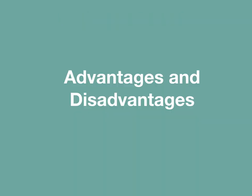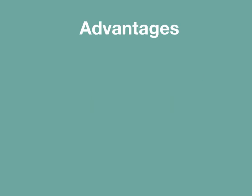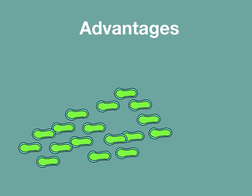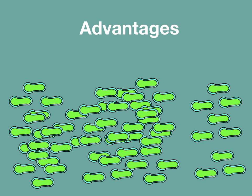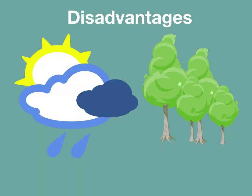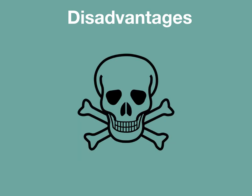There are some advantages and disadvantages to reproducing asexually. For the advantages, they can reproduce at a rapid rate and quickly increase their population. However, due to no genetic variation, if the environment changes, it will become more difficult to adapt to that new change. And another disadvantage is that if a new predator or disease is able to kill one of the organisms, then it will be able to kill all the organisms in the population.